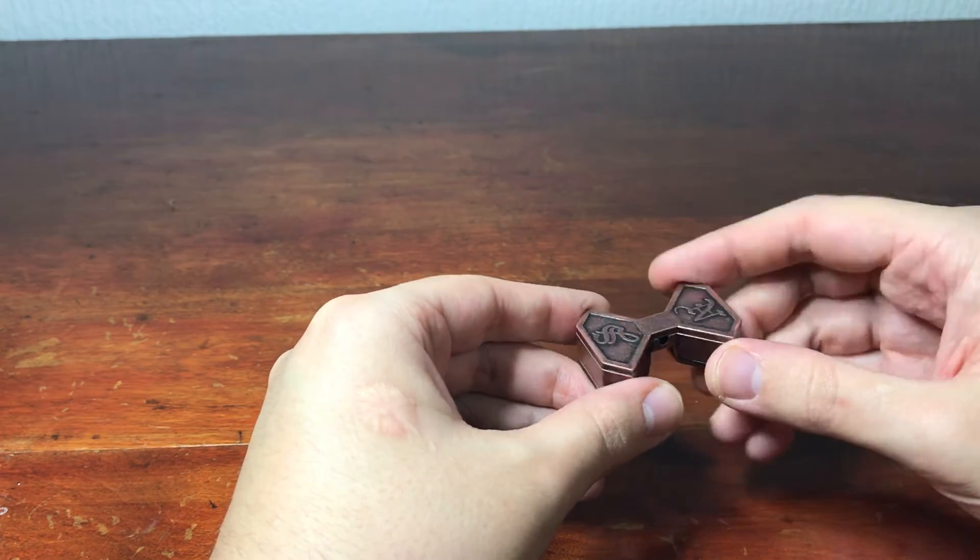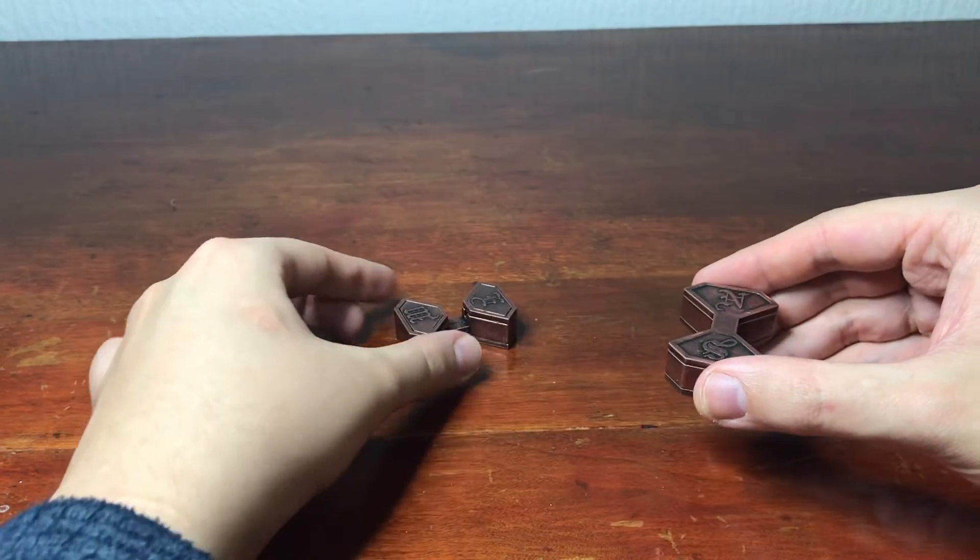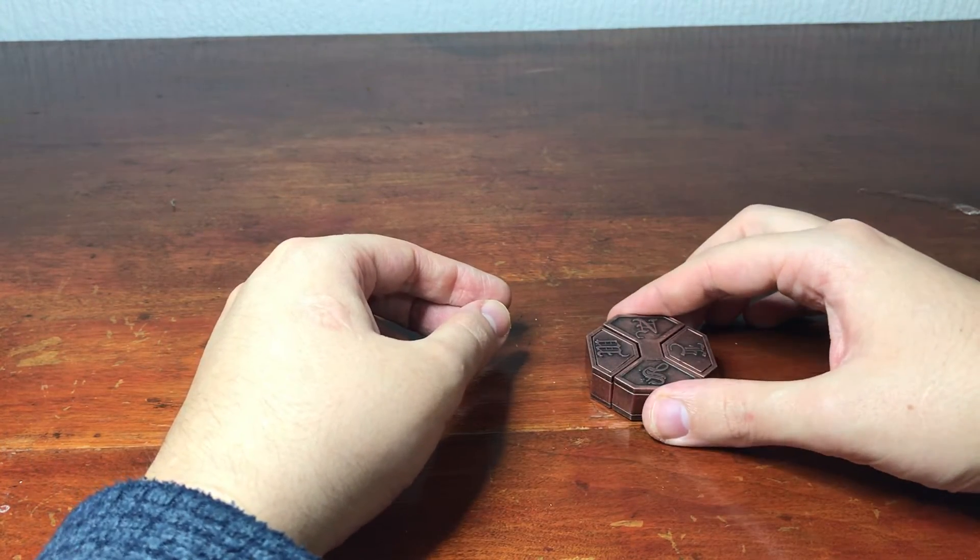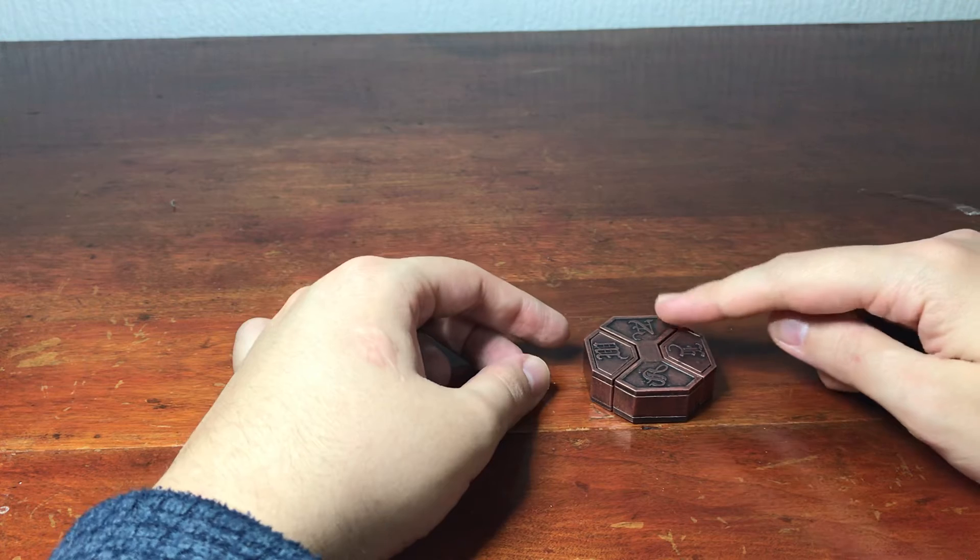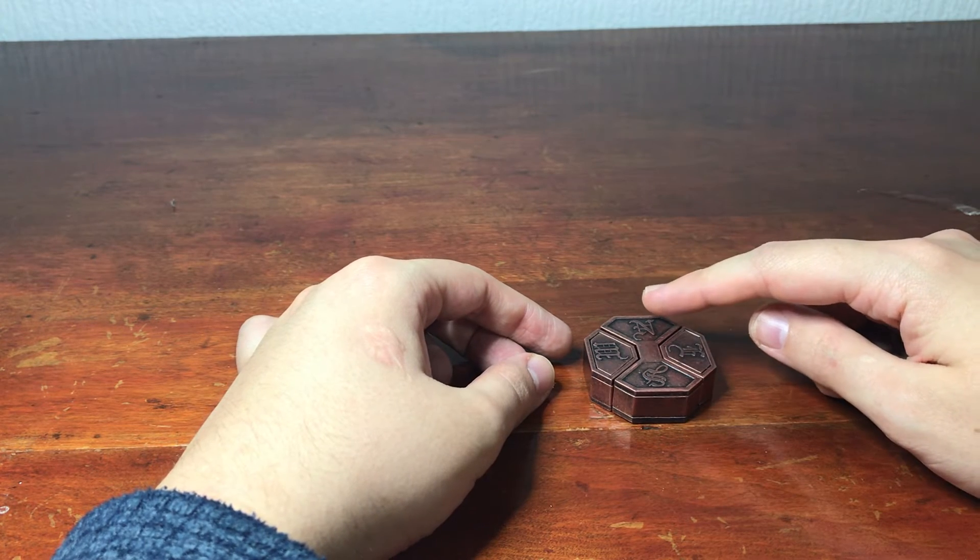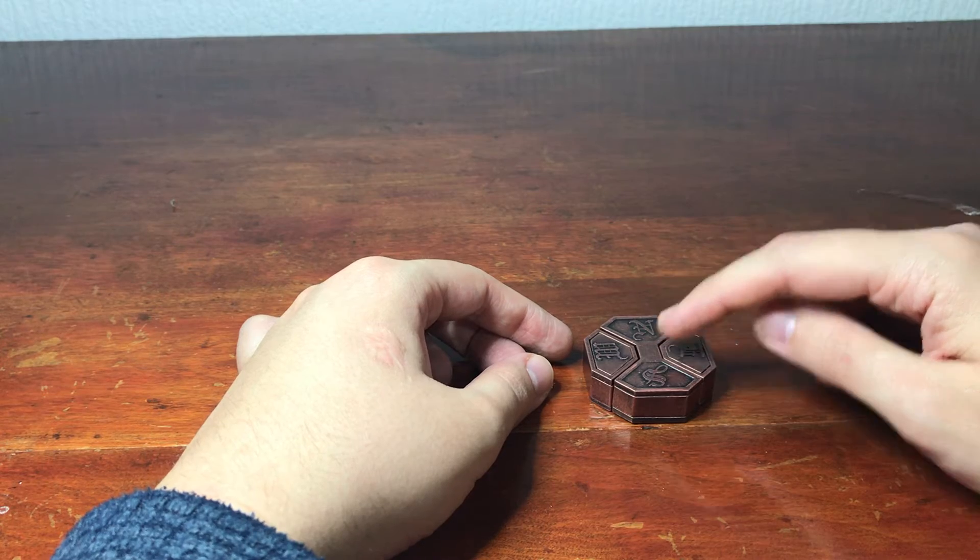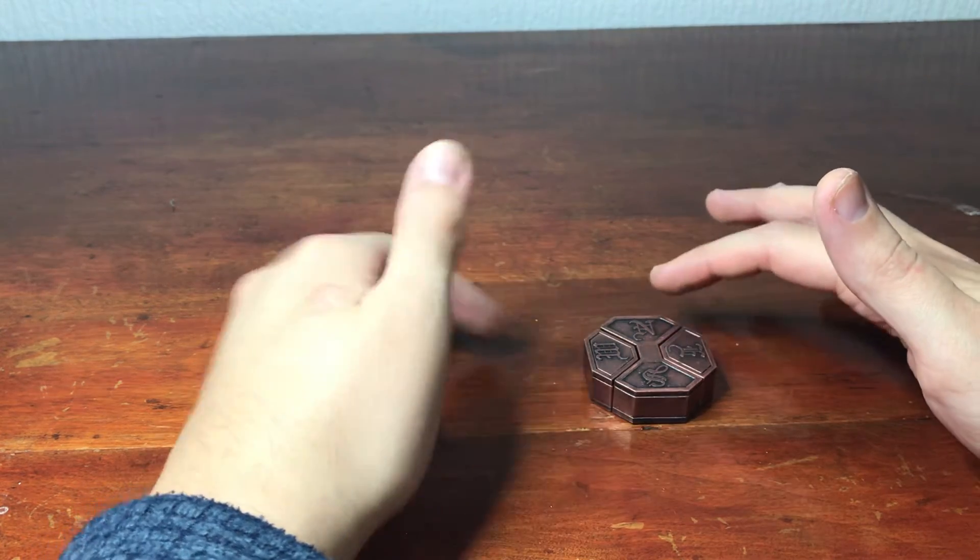And then you've got your north and your south, and then you just need to line it up so that you've got the compass in the right order, rather than it going north, west, south, east, or whatever. Make sure it's north, east, south, west.